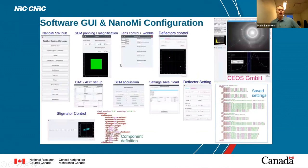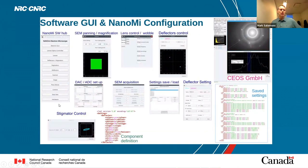Here's an example of the software system — we have a hub and then various modules. If you're doing SEM you have SEM panning, mag, and acquisition. If you're doing TEM, of course we have our stigmator and deflectors and then the actual imaging. It's very modular and can be added to at will for any kind of module you want to add.